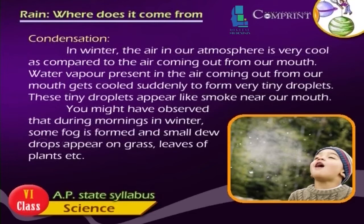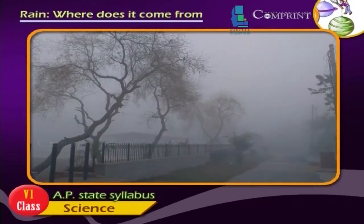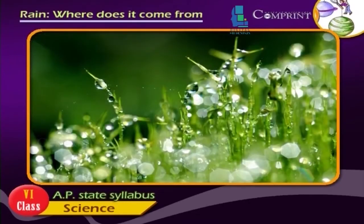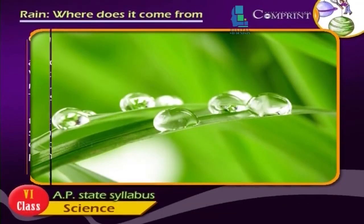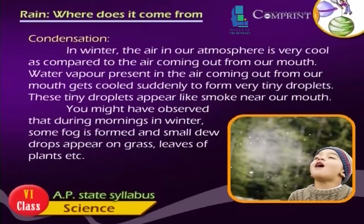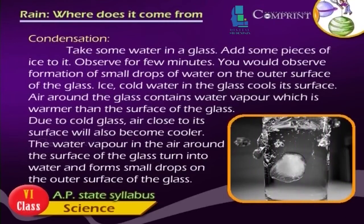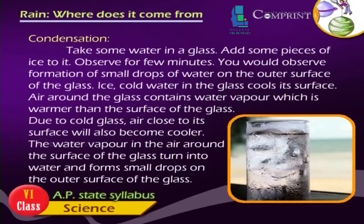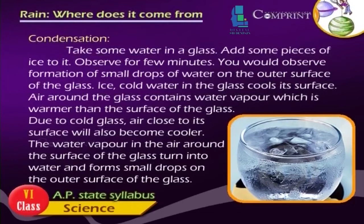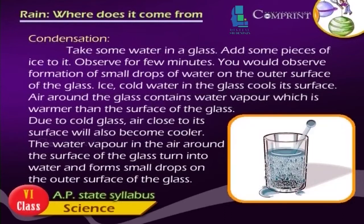These tiny droplets appear like smoke near our mouth. During winter mornings, some fog is formed and small dewdrops appear on grass and leaves of plants. If you take some water in a glass and add pieces of ice, you will observe small drops of water forming on the outer surface of the glass. The cold water cools the glass surface, and the warmer water vapour in the surrounding air condenses into water drops on the outer surface of the glass.